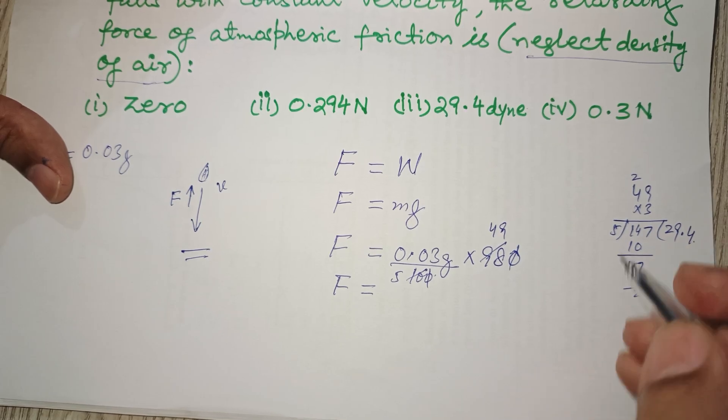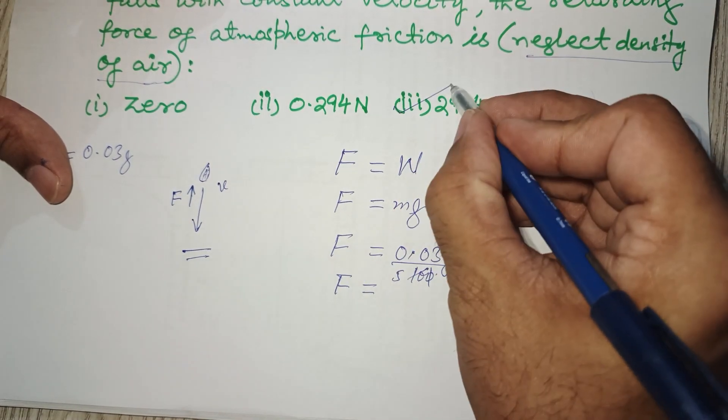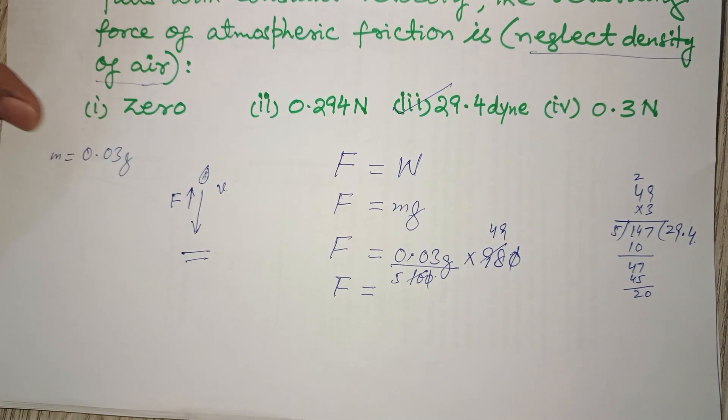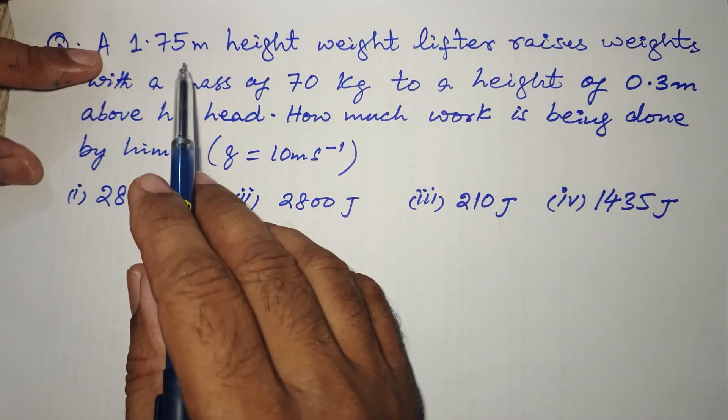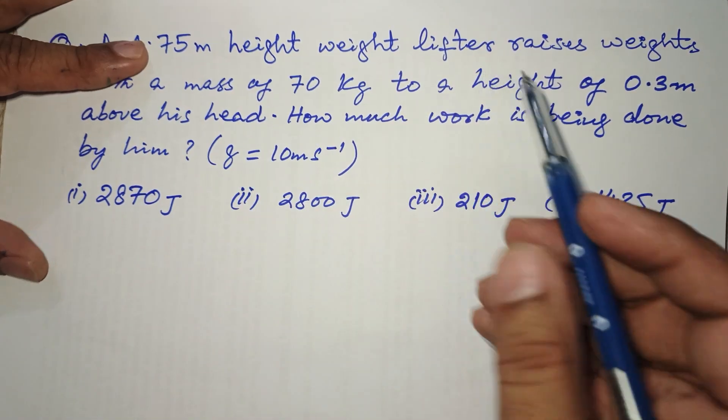So the answer is 29.4 dynes. Move to the next one. A 1.75 meter height weight lifter...